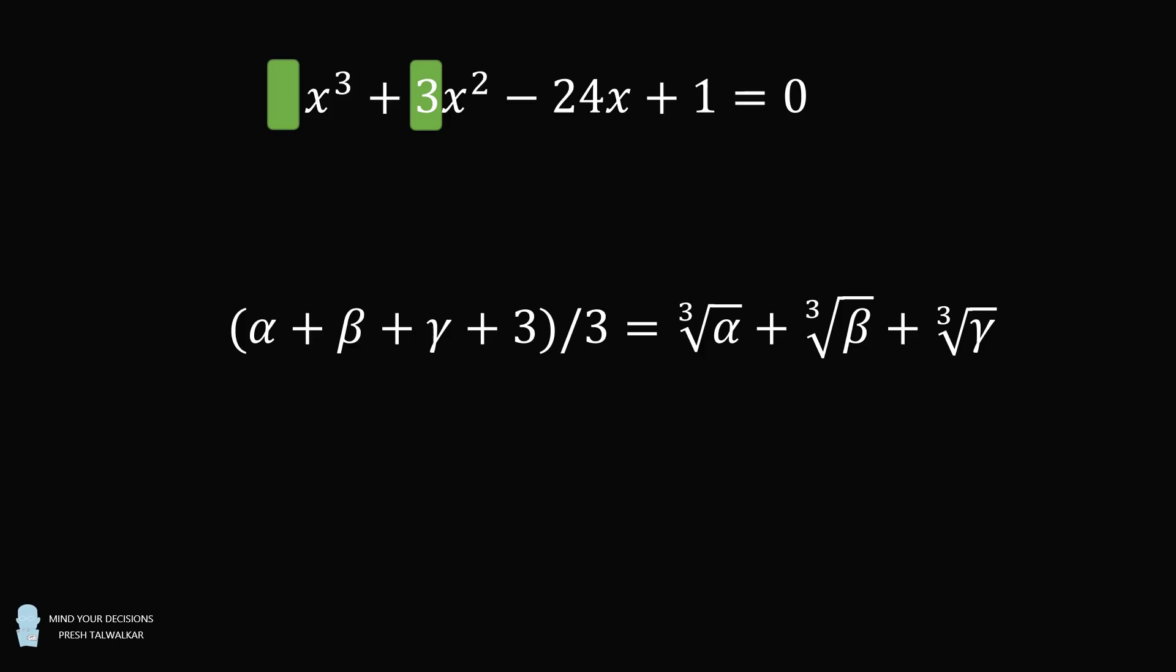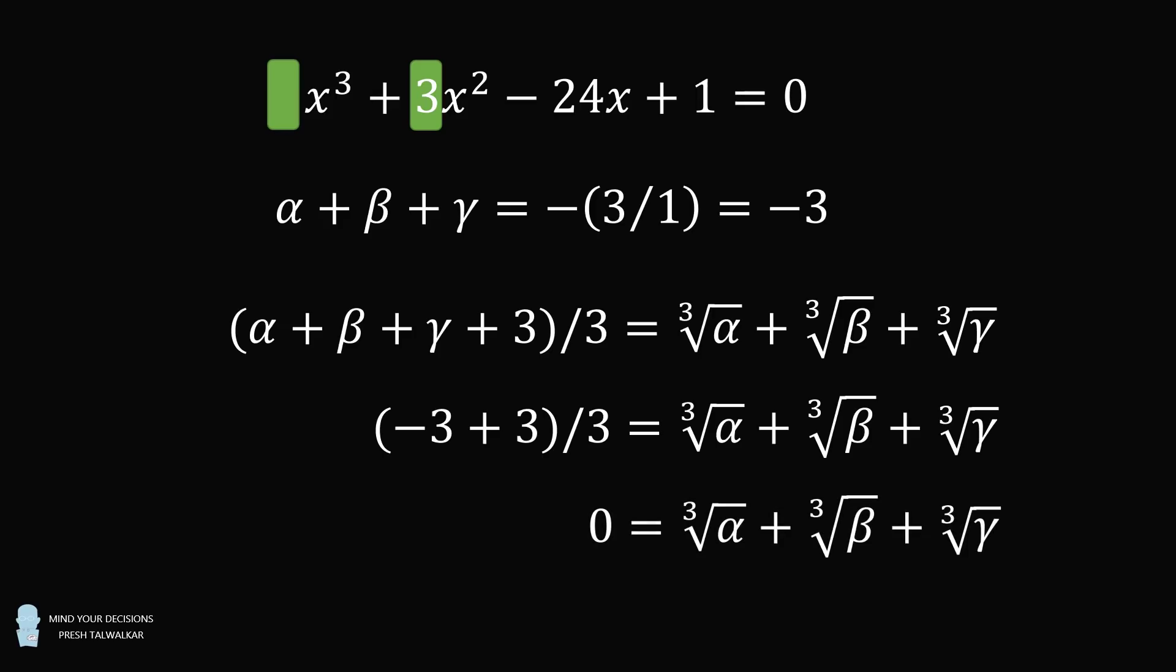The roots are alpha, beta, and gamma. So we have alpha plus beta plus gamma equals the opposite of 3 over 1, which equals negative 3. We can substitute that in, and then we have negative 3 plus 3 equals 0. So we have 0 equals the cube root of alpha plus the cube root of beta plus the cube root of gamma. And that's the answer.